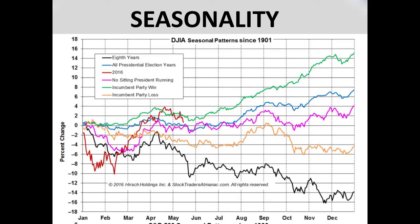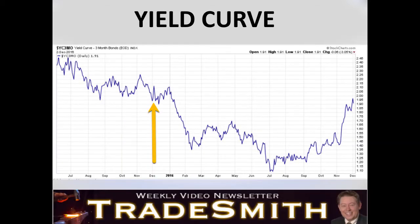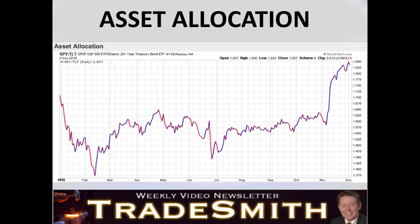Seasonality: looking for a dip here in the early part of December, and then the market should take off and do really well in the second half. The yield curve is just keeping a cap on rallies — it's not bearish. It's only bearish when it gets down around zero, and a year ago it was up around two, so it's not even close to zero. This is not bearish at all, but it does kind of keep a cap on profitability for us.